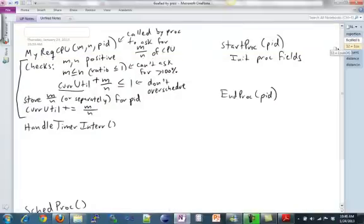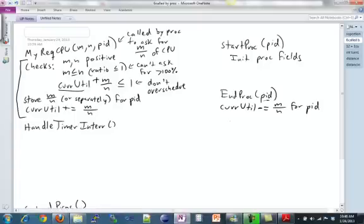What about ending proc? Ending proc, the most important thing you have to take care of is to make sure that you update utilization, right? If this process is done, its utilization is done. You don't have to worry about it anymore. If it asks for 50%, that 50% is now free for other processes to use.